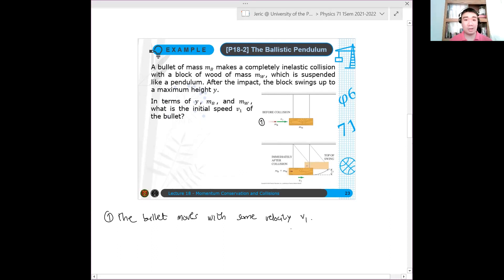Let's say you have V1. Okay, that V1 is unknown. And then second, after that, the second state is that the bullet collides with the wood and that system gains some velocity V2.